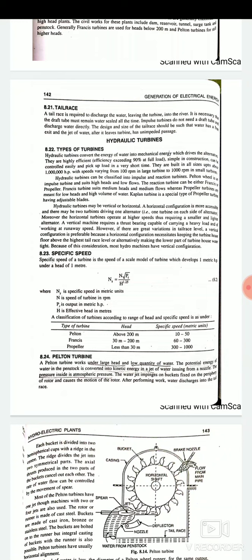Next is tailrace. A tailrace is required to discharge the water leaving the turbine into the river. It is necessary that the draft tube must remain water sealed all the time. Impulse turbines do not need a draft tube and discharge water directly. The design and size of the tailrace should be such that water has a free exit and the jet of water after it leaves turbine has unimpeded passage. So this is about tailrace. Next is hydraulic turbines which are used in the hydroelectric power plants.